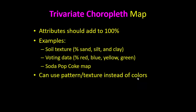Now let's look at trivariate choropleth maps, where we look at three different variables. This is where it starts to get complicated. When we have too many variables, we're adding too much confusion — simplification and generalization are key characteristics of cartography. When thinking about trivariate maps, we should try to get the attributes to add up to 100%. Examples include soil texture (the soil texture triangle), voting data with Republican, Democrat, Independent, and Green Party, and the famous Soda-Pop-Coke map. You can also use pattern and texture instead of colors.